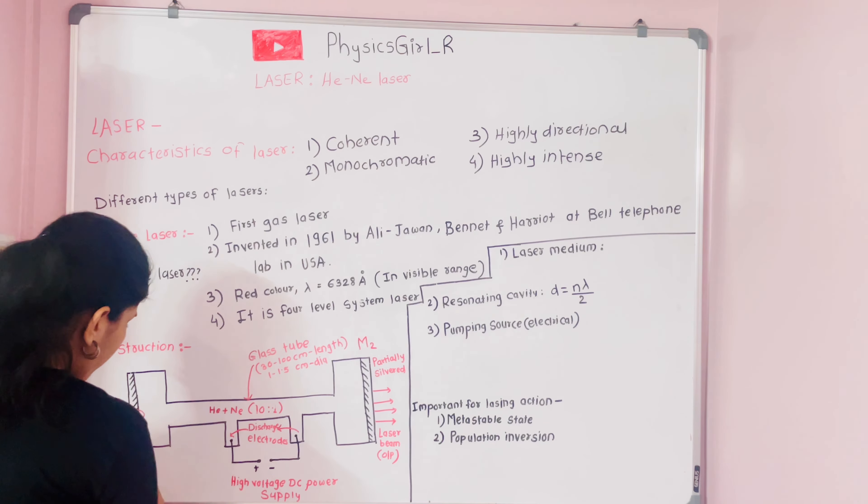The condition for placing the two mirrors is that the distance D between them must satisfy D = Nλ/2, where λ is the wavelength of the laser light and N is an integral multiplying factor. This means the distance between the two mirrors must equal an integral multiple of half the wavelength of the laser light.